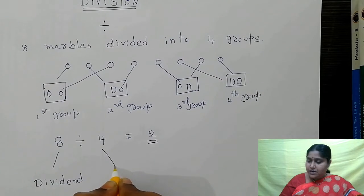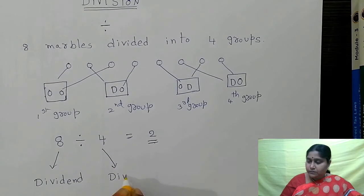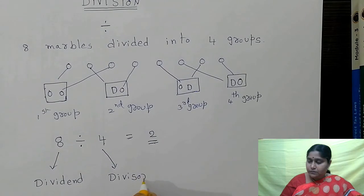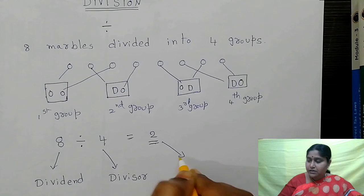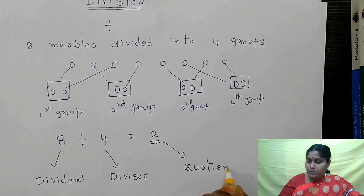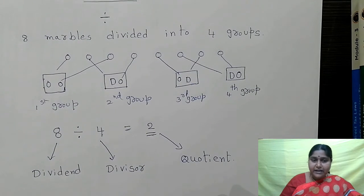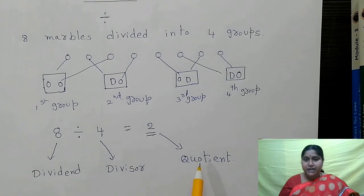Here, 4 is called the divisor. The answer that comes is called the quotient. Once again, I will read the pronunciation. Listen carefully. This 8 is called dividend, 4 is divisor, 2 is quotient.